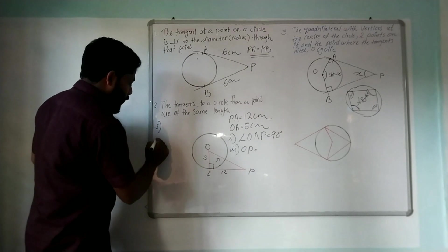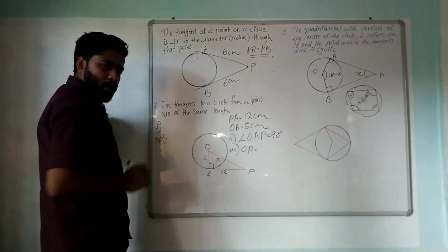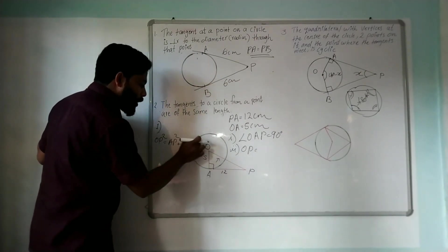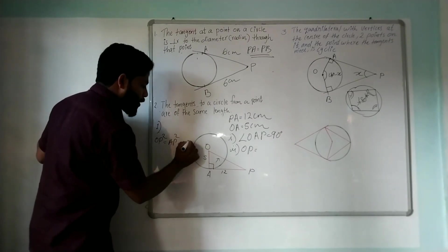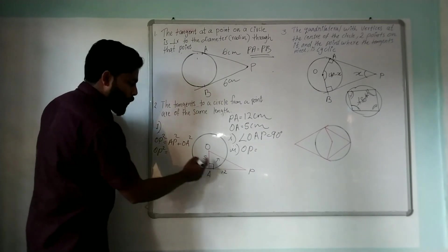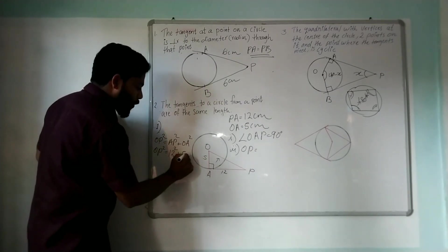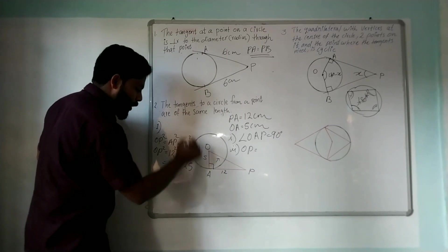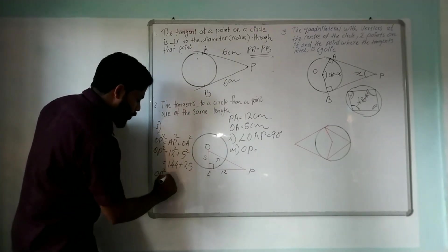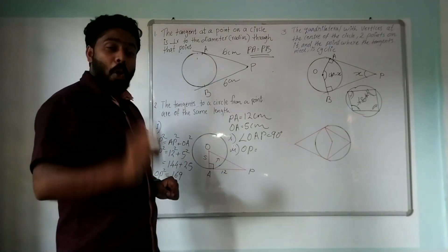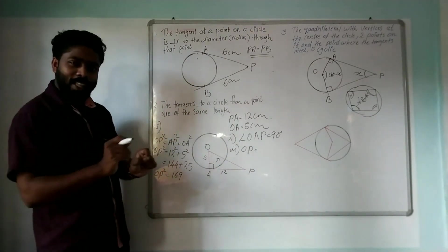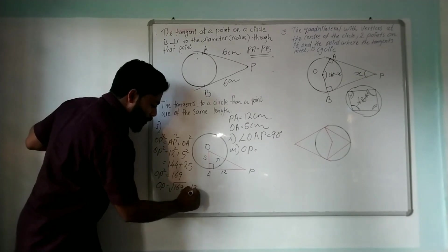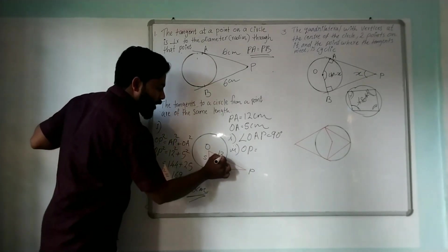OP² = AP² + OA². So OP² is equal to 12² plus 5², which equals 144 plus 25. Then OP² equals 169, so OP is the square root of 169, which is 13 cm.